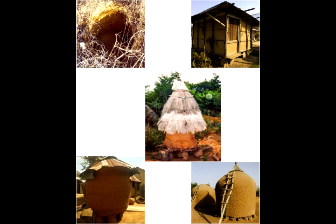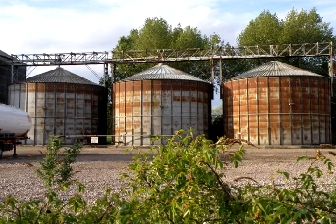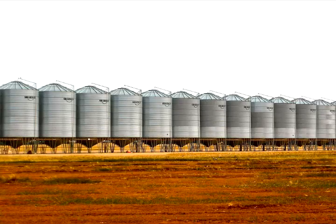We follow grain storage methods today that have been around since ancient times. Granaries are a method used to store grains. Granaries are very large containers. In olden times, they were made from a variety of materials such as bamboo, dung, wood, clay, and brick. With the passage of time and discovery of new materials, they also took the form of metal containers.